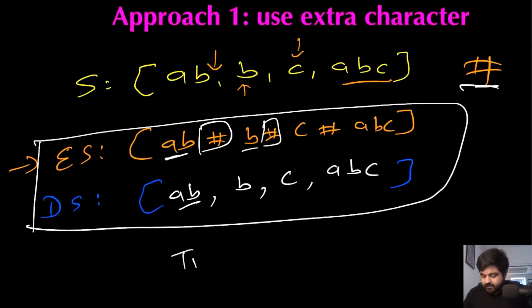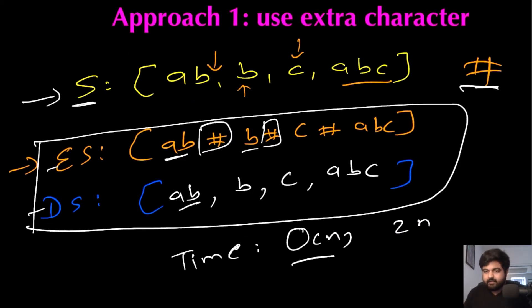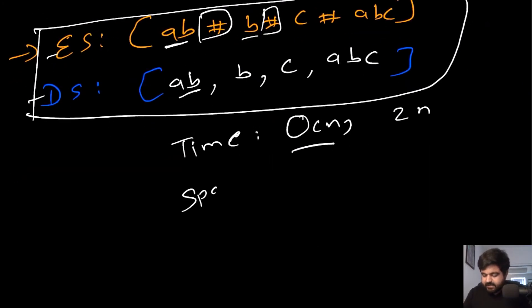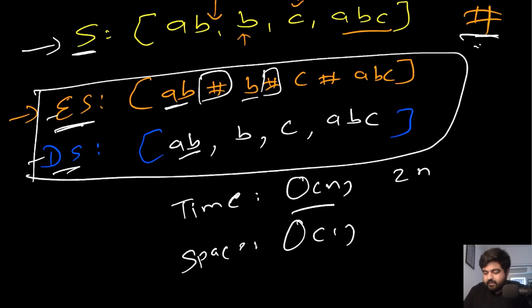The time complexity is O(N) because we iterate over all characters in the string to encode and then decode — overall 2N, but we write it as O(N). The space complexity is not that much; we just create an encoded string and a decoded string, using only a small amount of extra space.